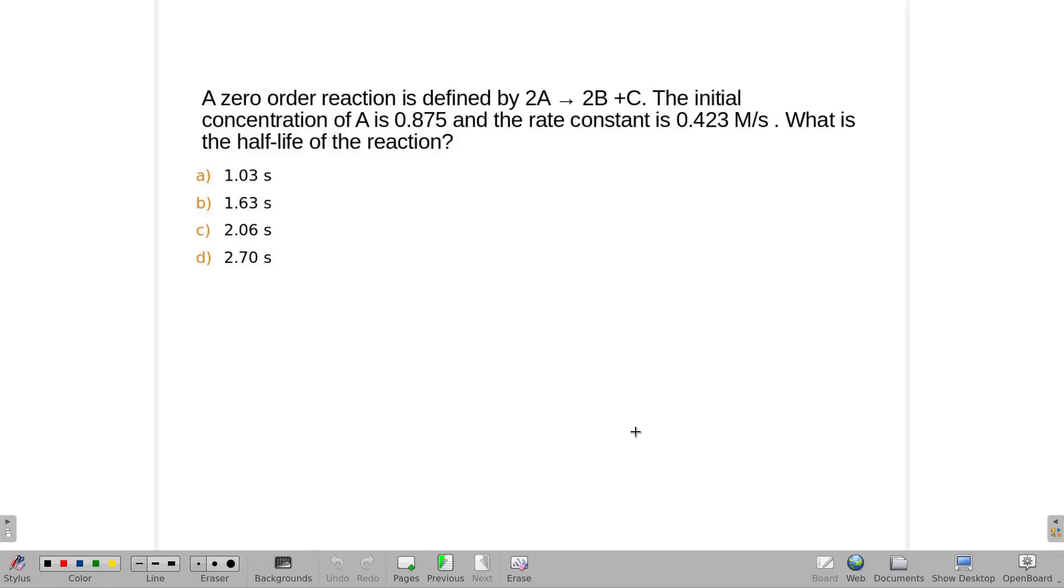A zero-order reaction is defined as A going to B and C. The initial concentration of A is 0.875 and the rate constant is 0.423 molarity per second. What is the half-life of the reaction?